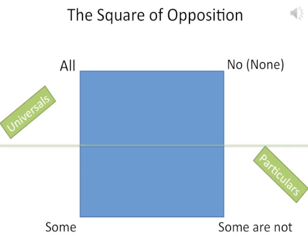If we look at particular quantities, these are individual quantities or small classes out of the category. For the category of dogs, the particular instances would be German Shepherds as a class of that category, or perhaps Chihuahuas, or maybe those robotic dogs like the Aibo. Anything that is a subset of that class is a particular quantity.